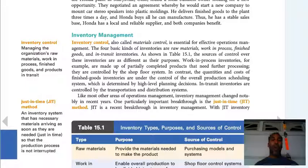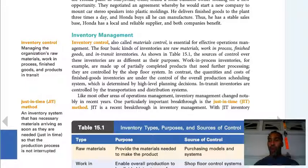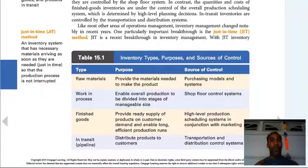Inventory control involves managing the organization's raw materials, work in process, finished goods, and products in transit. When you get to your accounting class, you'll see raw materials flowing to work in process, then to finished goods inventory, and then to cost of goods sold — this is how much it costs to make the goods, including wood, labor, and manufacturing overhead.